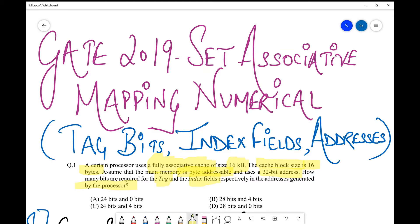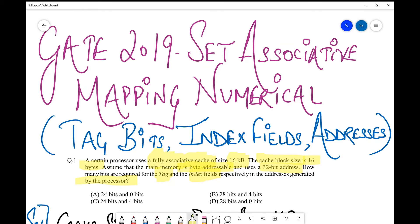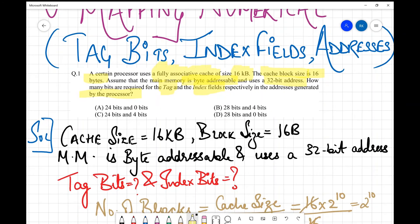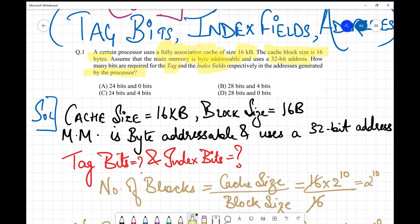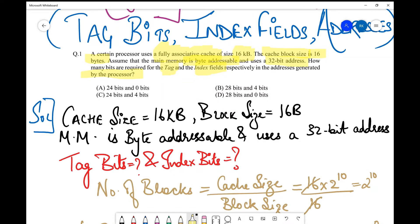So now let's see how we do this. As I already said, the first step should be to jot down everything which is given in the question. So that is what I have done over here. I've written all the things which are given. For example, the cache size is 16 KB, I've written it as is. Then the block size, then the main memory is byte addressable and it uses a 32-bit address. One important thing I forgot to write over here: it is fully associative.